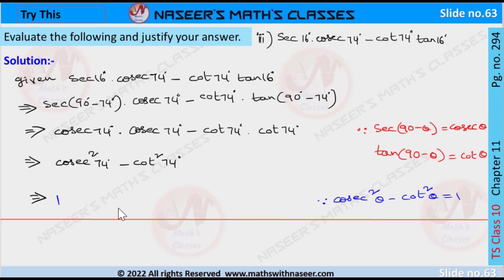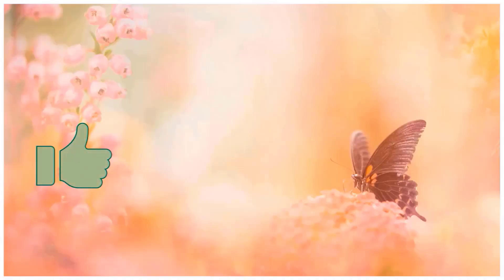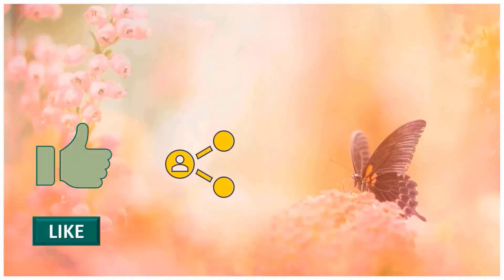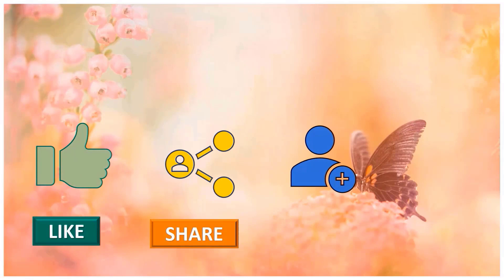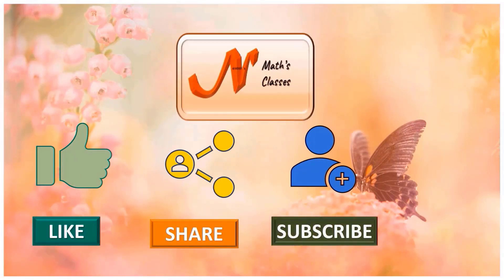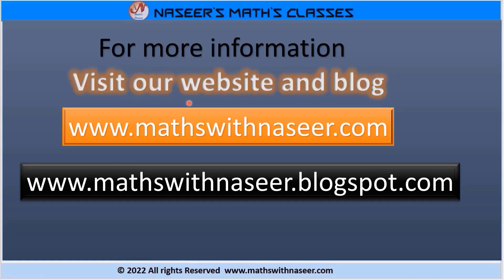Therefore sec 16° cos 64° − cot 74° tan 16° is equal to 1. Please like, share, and subscribe to our channel for the latest updates by pressing the bell icon. For more information visit our website www.mathswithnaseer.com and blog www.mathswithnaseer.blogspot.com. Thank you.